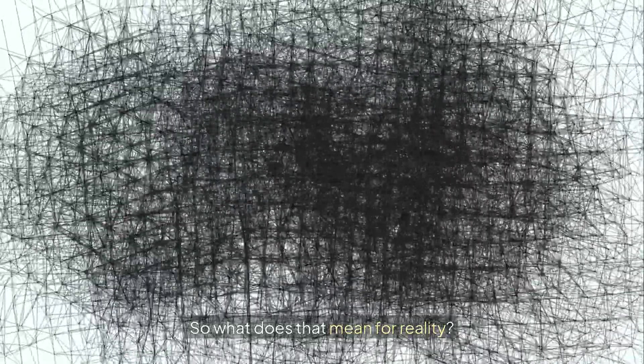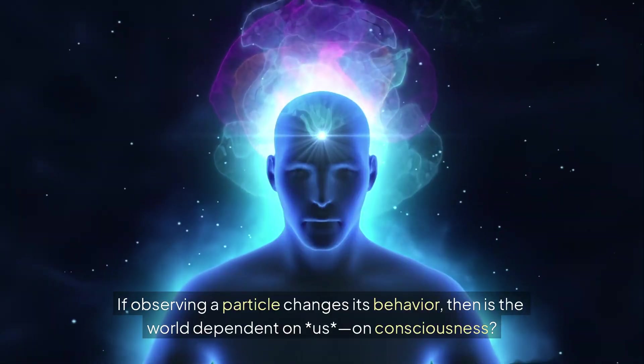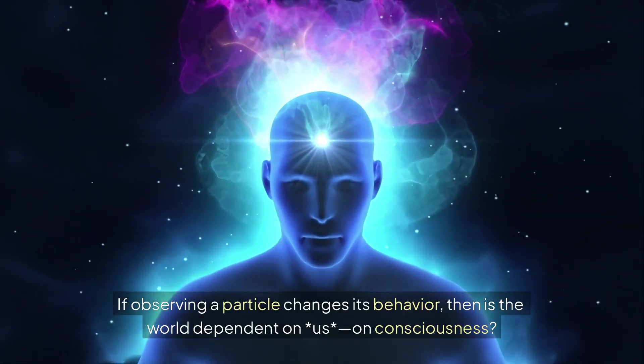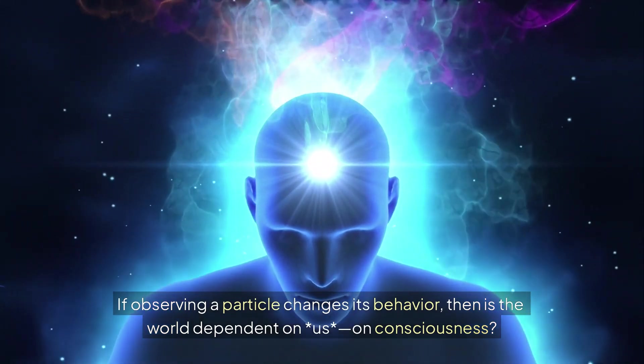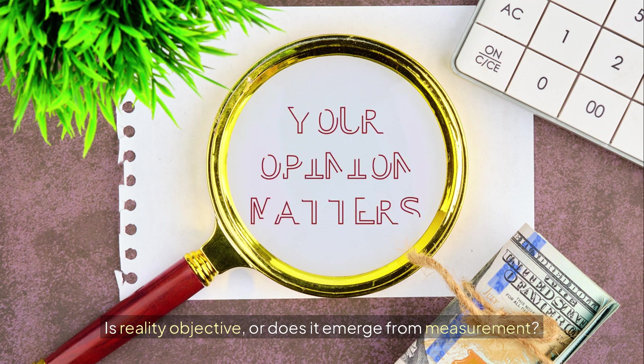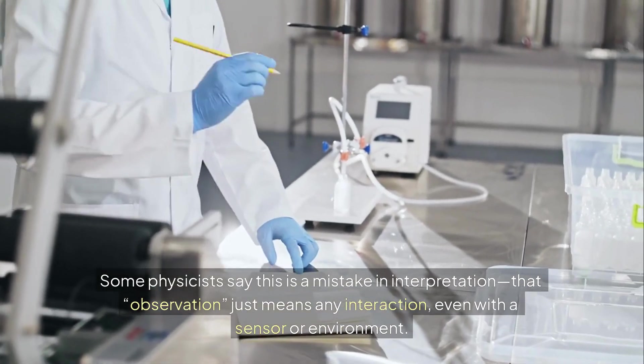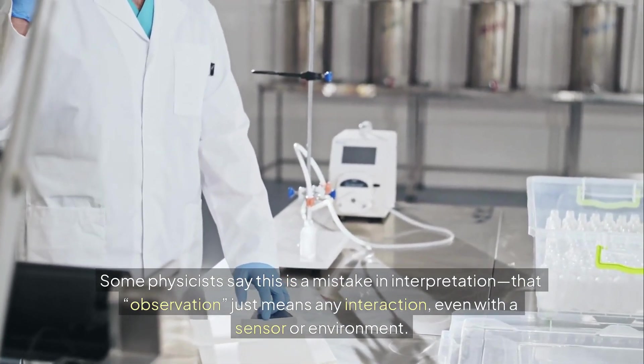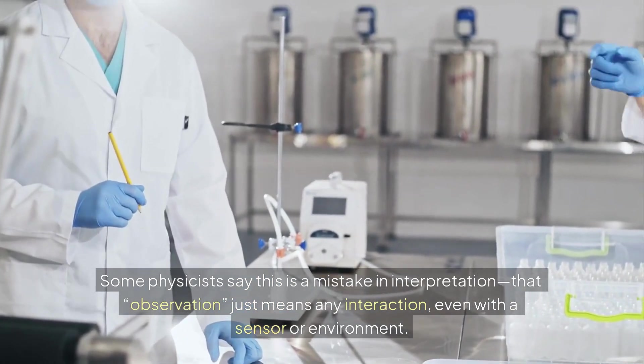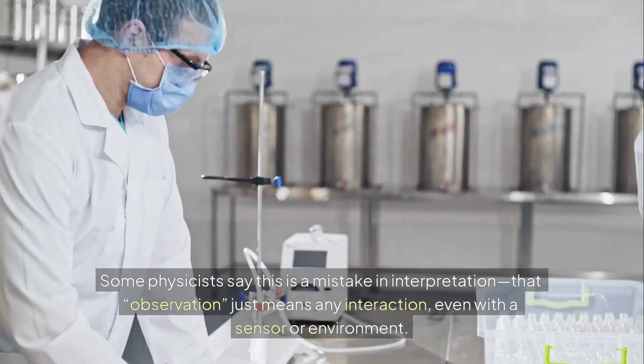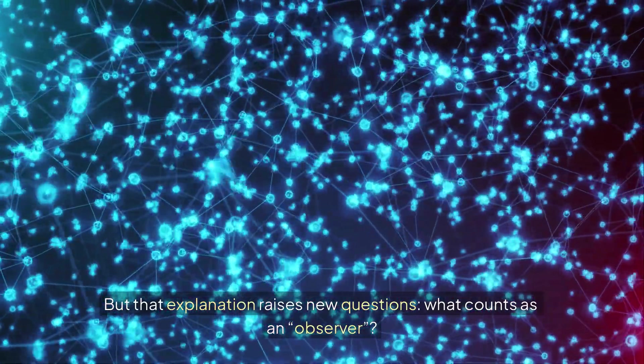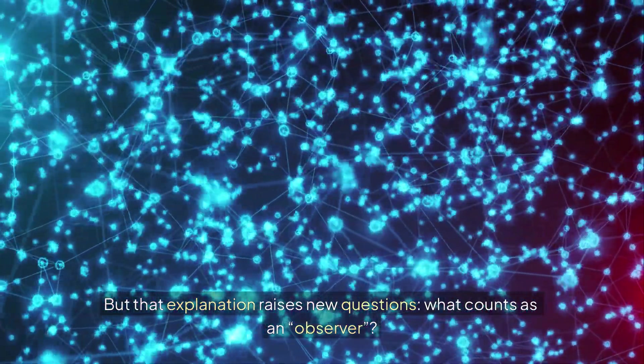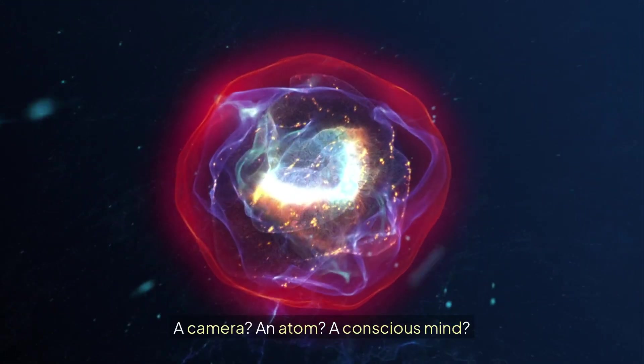If observing a particle changes its behavior, then is the world dependent on us? On consciousness? Is reality objective? Or does it emerge from measurement? Some physicists say this is a mistake in interpretation, that observation just means any interaction, even with a sensor or environment. But that explanation raises new questions. What counts as an observer? A camera, an atom, a conscious mind?